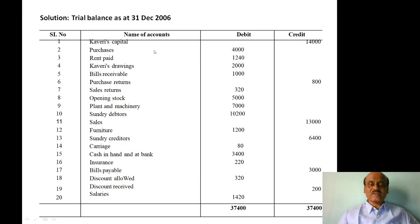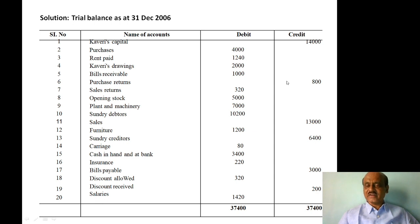Next, purchases — expense — debit column. Rent paid 1,240 — expense — debit column. Drawings — debit column. Bills receivable 1,000 — debit column. Purchase returns — credit balance — credit column. Sales returns — debit column. Opening stock — debit column. Plant and machinery — debit column. Sales — credit column. Furniture — debit column. Sundry creditors — liability, credit balance — credit side.